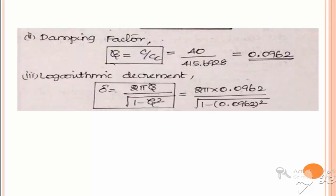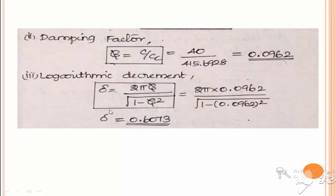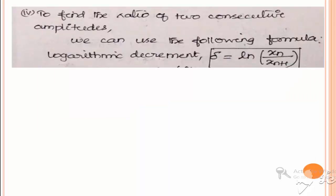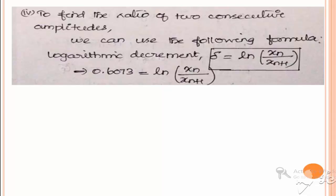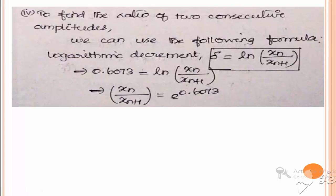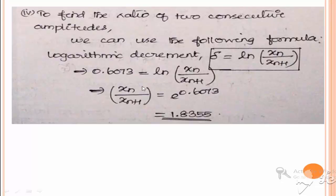Next, the logarithmic decrement delta can be found using the formula delta = 2πζ / √(1 − ζ²). Substituting the value of zeta, delta = 0.6073. Logarithmic decrement can also be expressed as delta = ln(xn / xn+1), the natural logarithm of consecutive amplitudes. Equating this to the calculated value, xn / xn+1 = e^0.6073 = 1.8355.